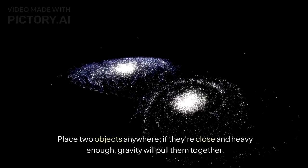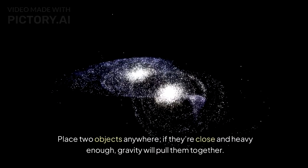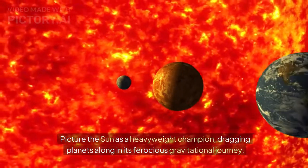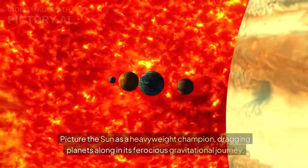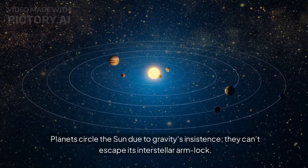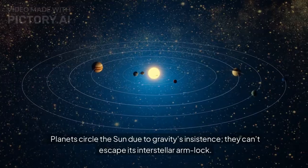Place two objects anywhere. If they're close and heavy enough, gravity will pull them together. Picture the sun as a heavyweight champion, dragging planets along in its ferocious gravitational journey. Planets circle the sun due to gravity's insistence. They can't escape its interstellar armlock.